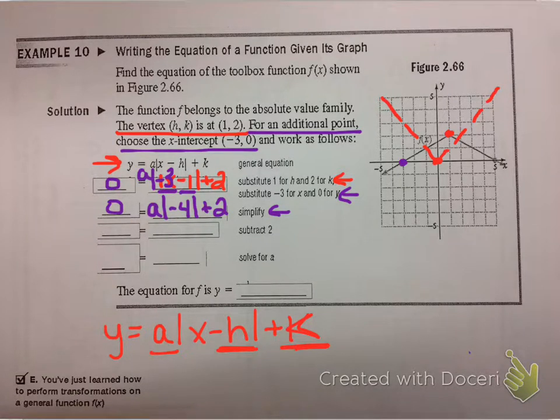And so I'm going to solve this. Okay, so it says to subtract 2. I'm going to take the 2 and move it to the left side. The other thing I'm going to do, even though it doesn't say it, is I'm going to go ahead and take the absolute value of negative 4. And the absolute value of negative 4 is positive 4. So it's positive 4 times a.